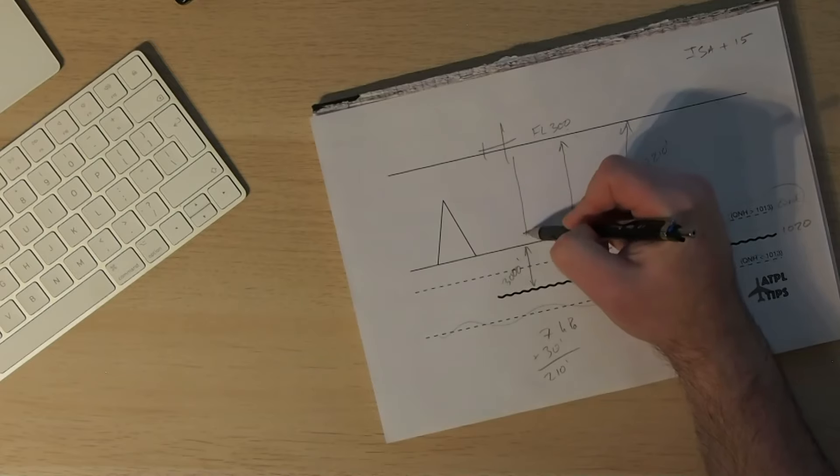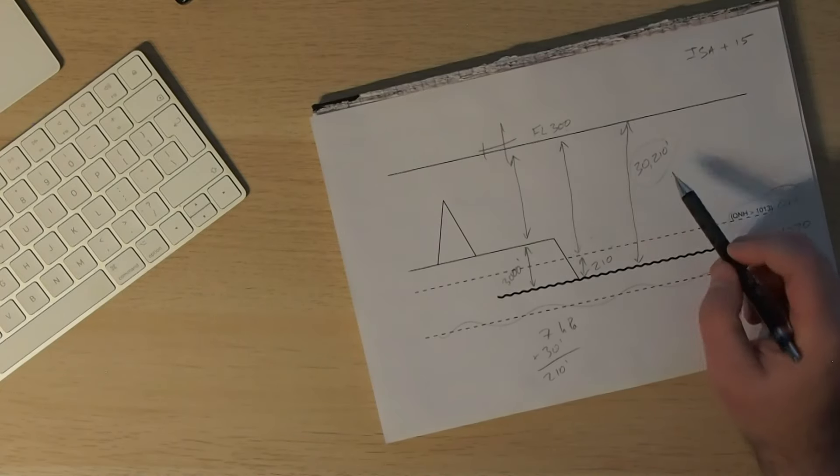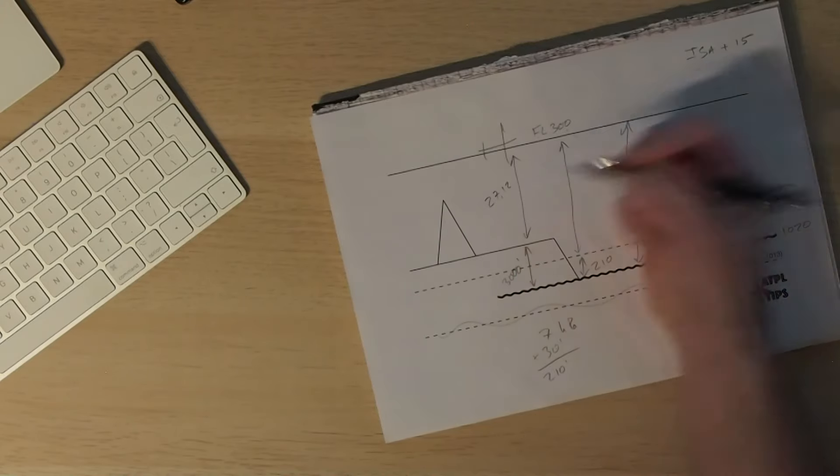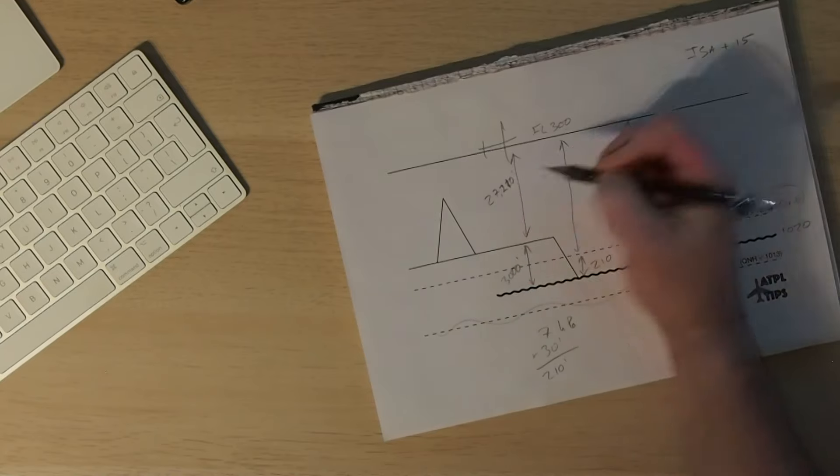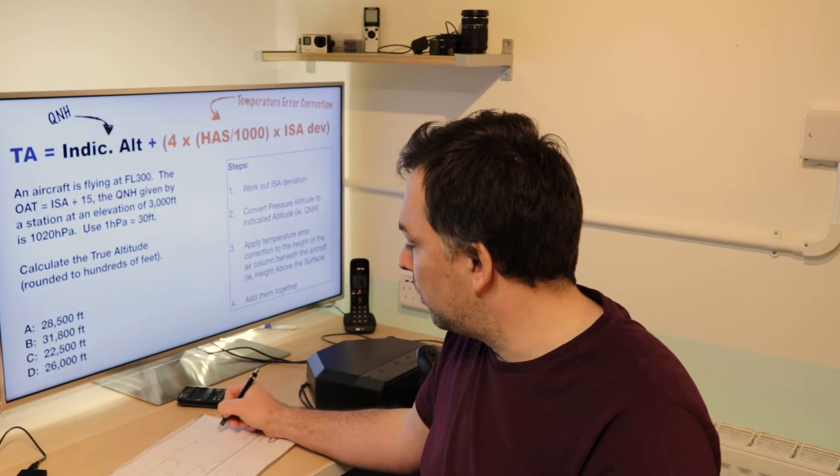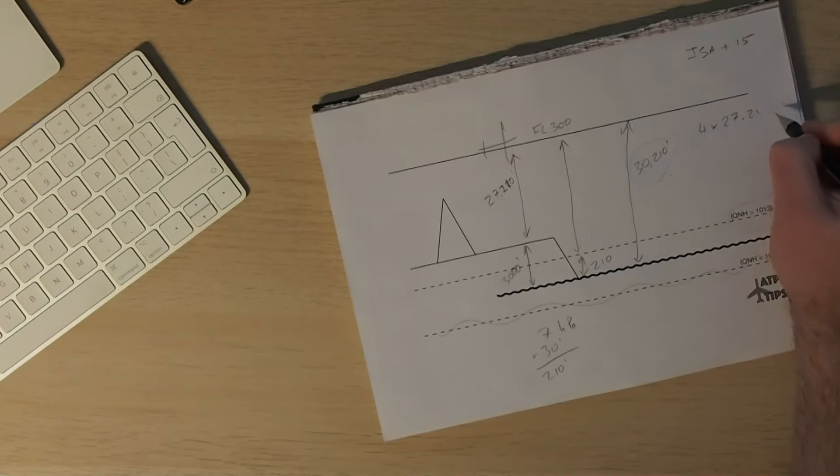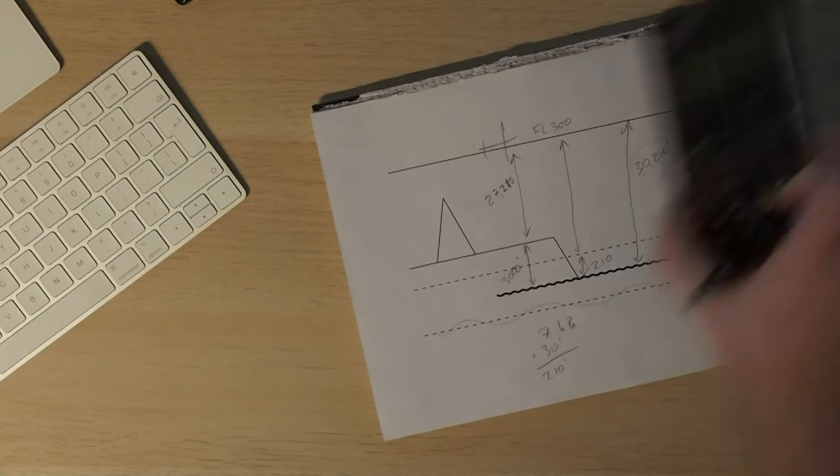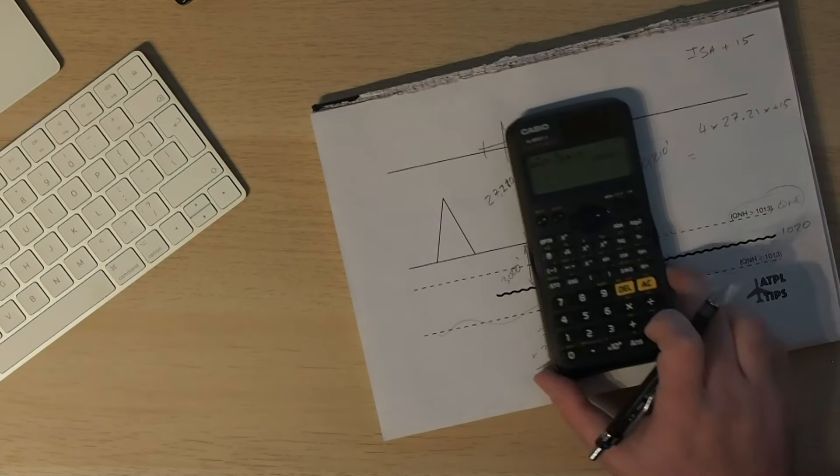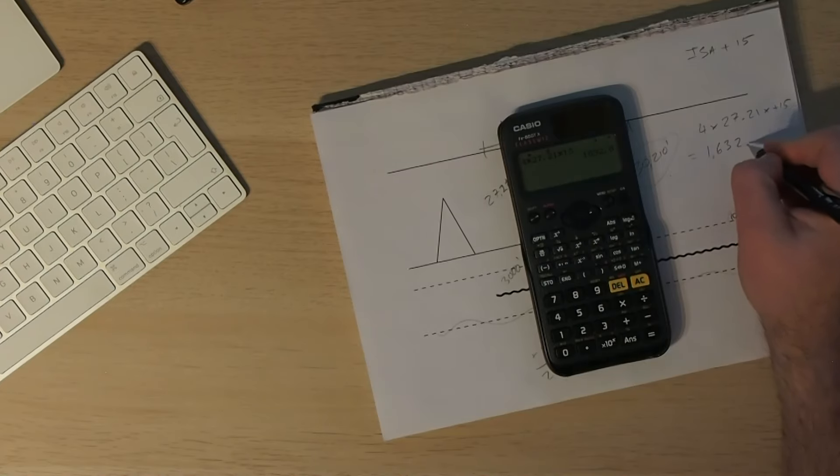Now, we need to add an error correction for the temperature. We're flying over an airfield that is at 3000 feet. So the parcel of air that is between us and the ground is actually 3000 feet less than our indicated altitude. So we can take 3000 off of 30,210 and we'll end up with an air parcel of 27,210 feet. And that's what we make our adjustment to for the non-standard temperature. So let's do 4 times 27.21 times plus 15. That's going to be our formula for the temperature error correction. And if we plug that into a calculator, that gives us an answer of 1632.6 feet.